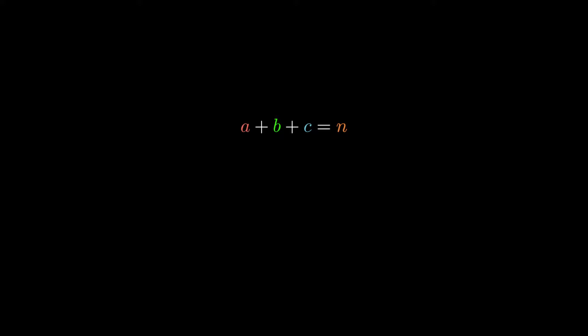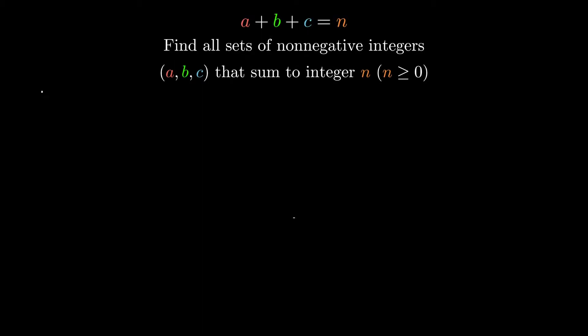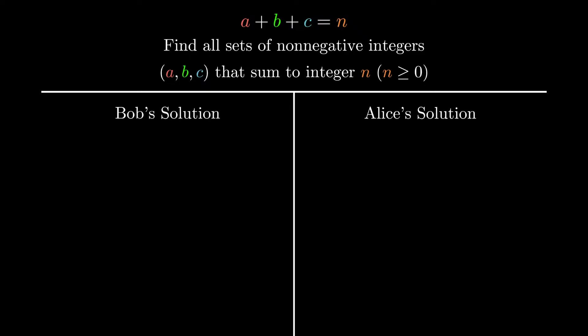All stories revolve around problems and characters. In this story, here is the problem. You want to find all sets of non-negative integers A, B, and C that sum to a particular n. Our main characters are two students, Alice and Bob. Both of them try to solve this problem and present the following solutions.